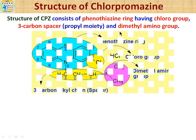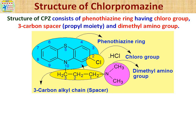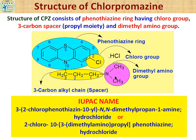Dear friends, in the structure of chlorpromazine, the phenothiazine ring is present. At the second position, a chloro group is attached. At the tenth position, a three-carbon spacer — a propyl moiety — is present, from which one hydrogen has been replaced by a dimethylamino group. Now let's discuss the IUPAC name; two IUPAC names are mentioned here.